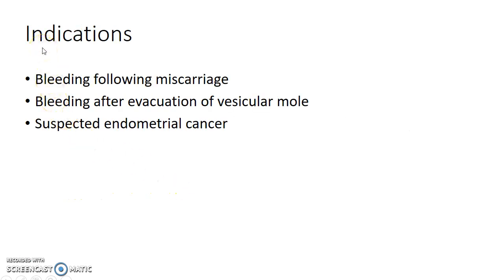Now let us see about the indications of DNC. DNC is done for bleeding following miscarriage — in this case it is done to remove retained products of conception. DNC is also done for bleeding after evacuation of vesicular mole, to exclude retained molar tissue and to diagnose gestational trophoblastic neoplasia.